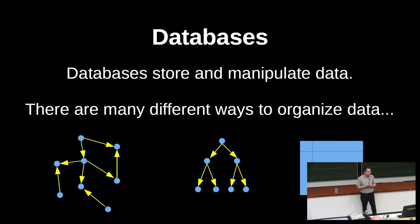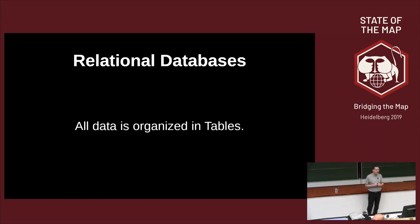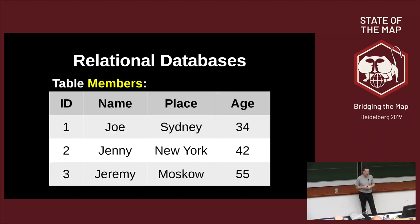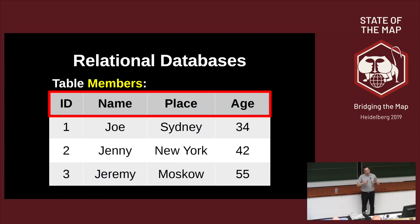Background: relational databases. There are many ways you can organize data. You can store it in some blob, you can have a tree, or you can organize it in a table. This is what a relational database does — all the data is stored in a table or in many tables. This is already something a little different from how OpenStreetMap thinks about its data model. You have a table with, let's say, the members of some organization — a name, a place where they live, an age — just some data, not geo data yet.